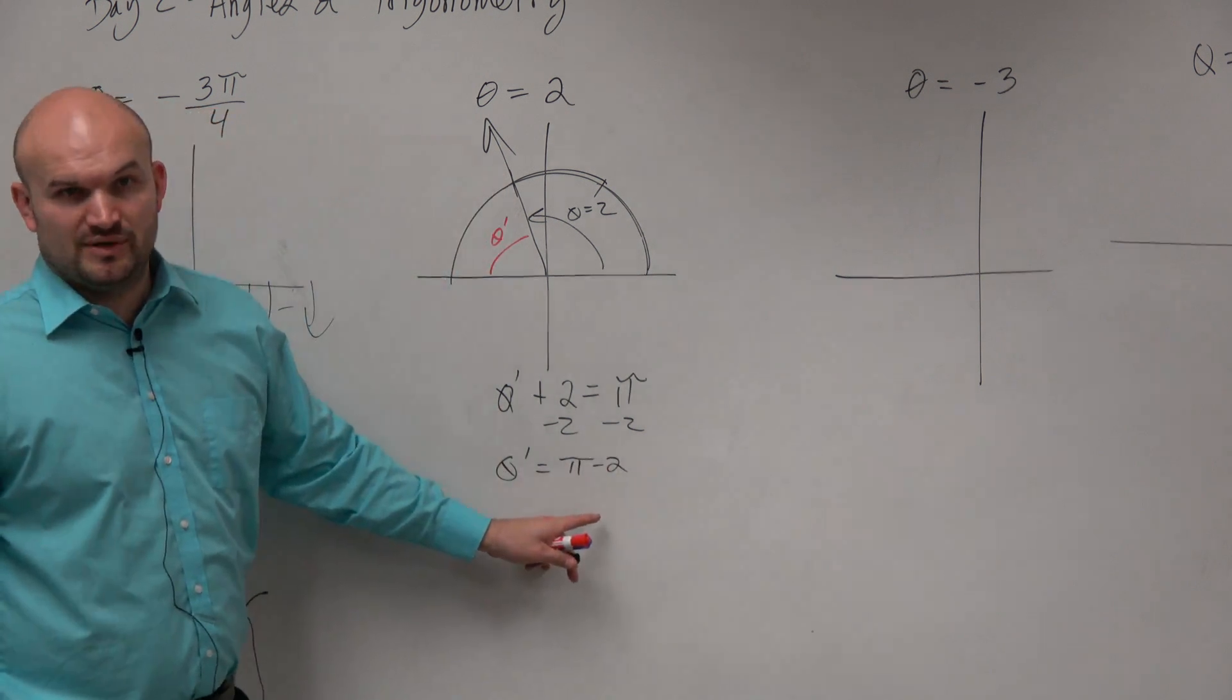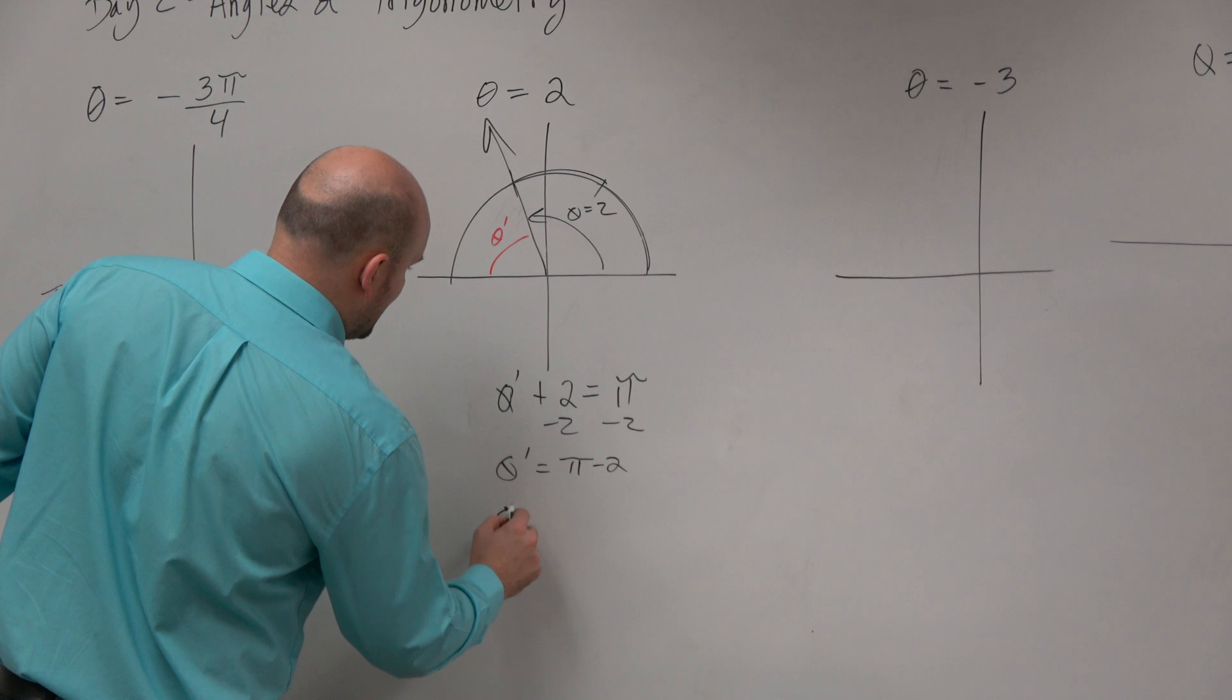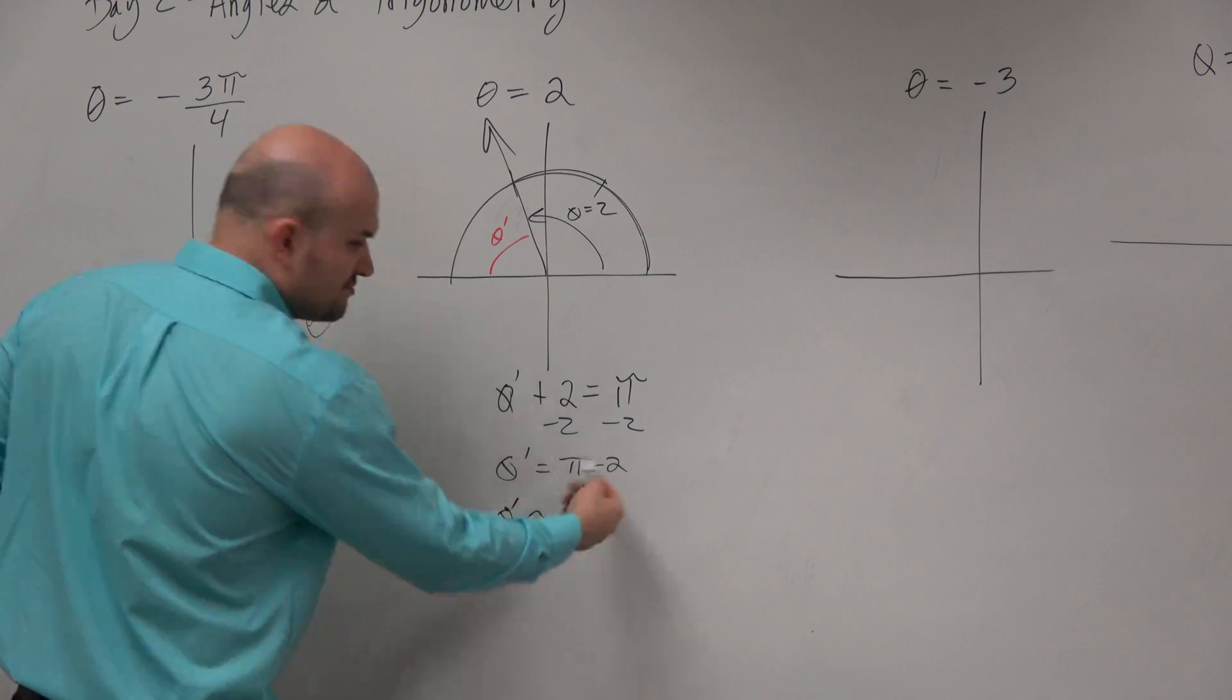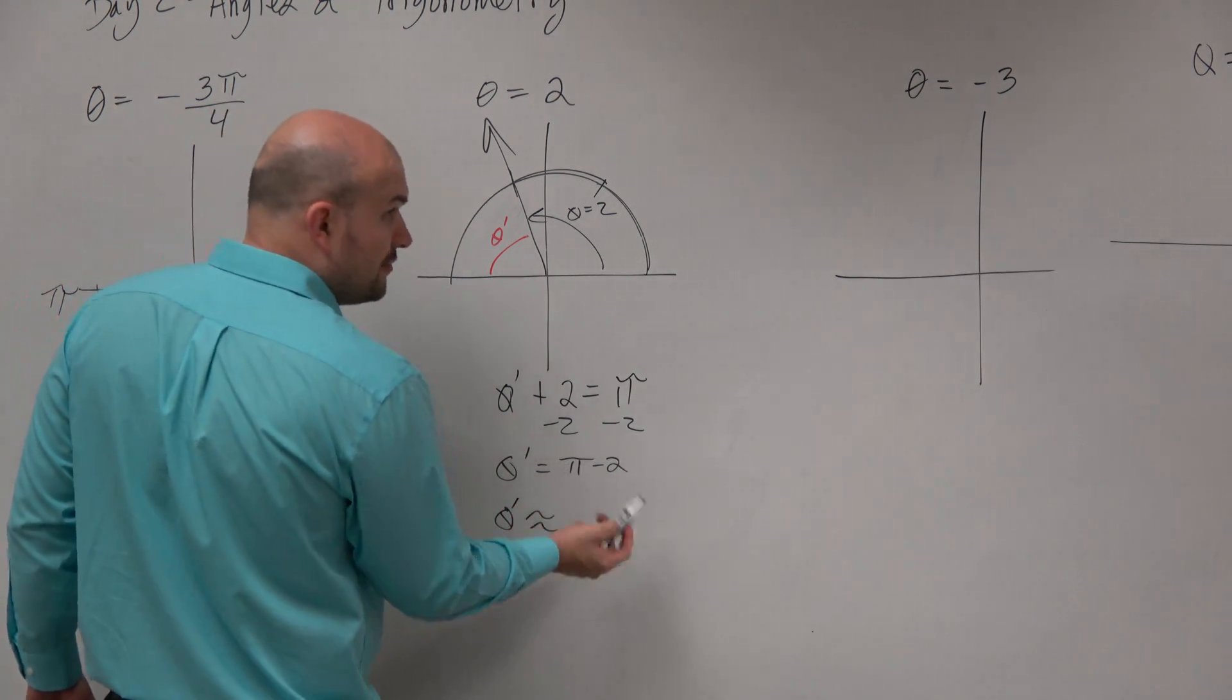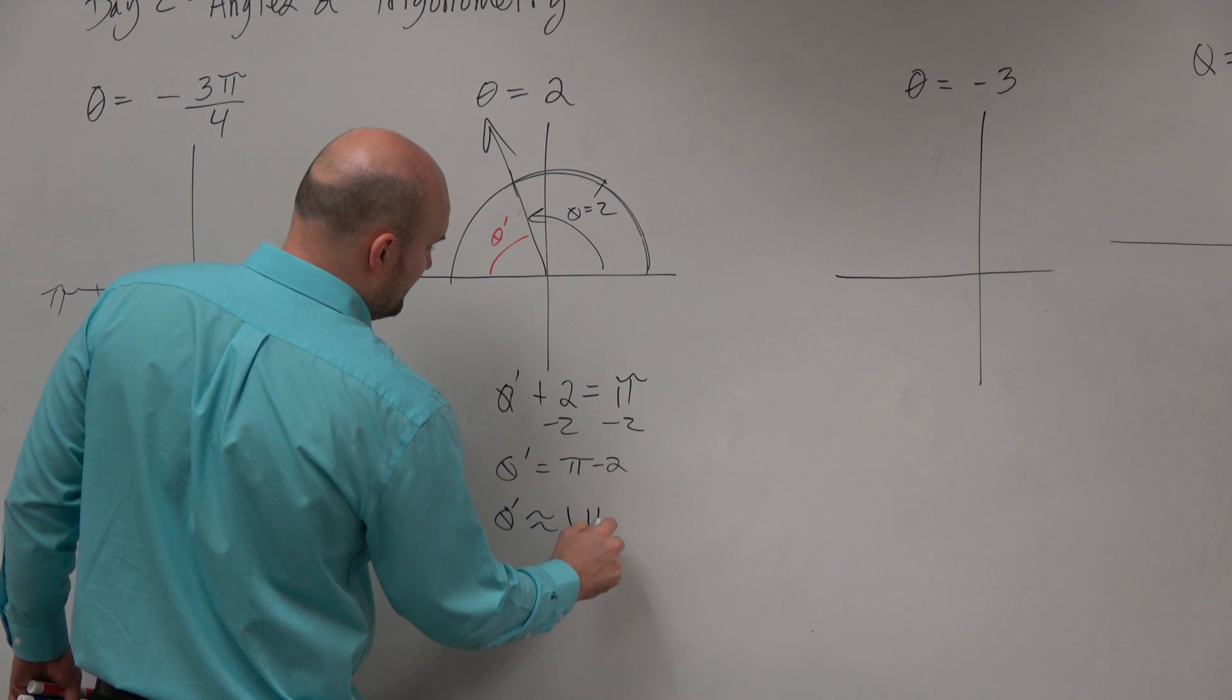If I was asking for an exact answer, we could give that. If I wanted an approximate answer, we could just round that, like it's 3.14. So that would be 1.14.